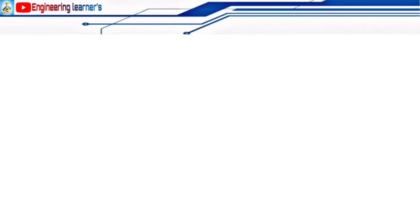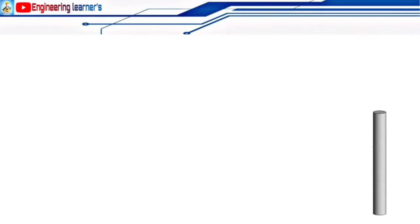Welcome to my YouTube channel Engineering Learners. Today my topic is about how we can calculate the cement, sand, and aggregate in a circular column. First of all, we will find the volume of a given circular column which has a length of 11 feet, a diameter of 9 inches, and a concrete ratio of 1:2:4.